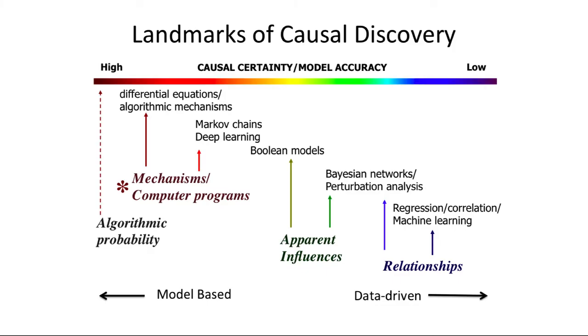This diagram illustrates the kind of direction in which we are pushing with algorithmic information dynamics. The diagram shows different types of landmark approaches to the problem of causal discovery. One can see how until very recently most approaches were mostly based on data with almost no model generation. This was the statistics-led approach for the last decade, still mostly in use today in the practice of research and science.